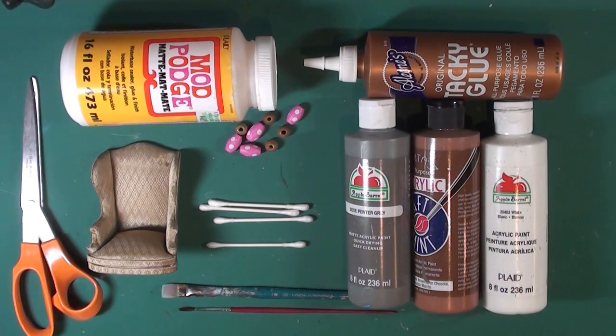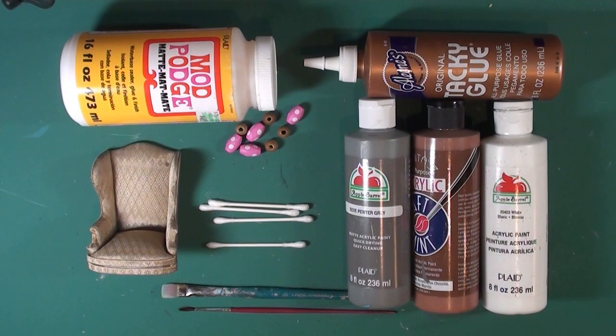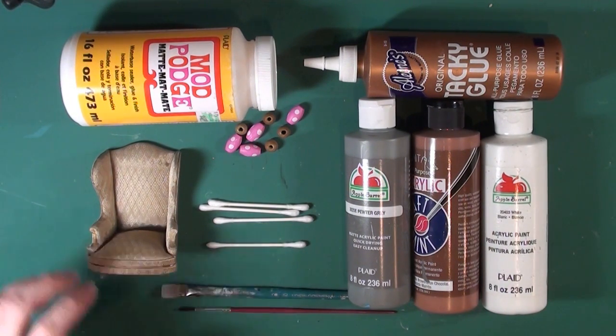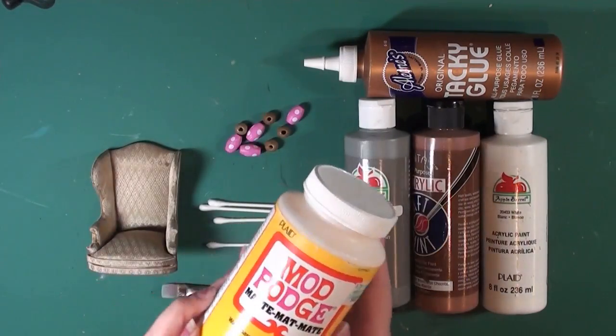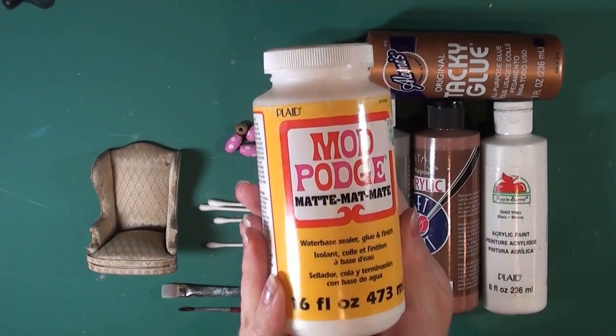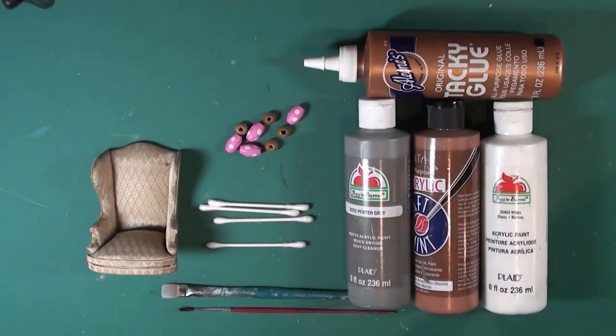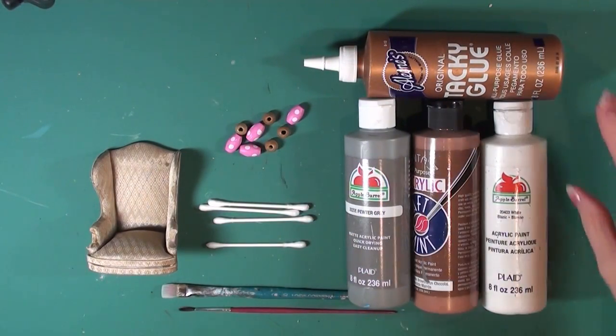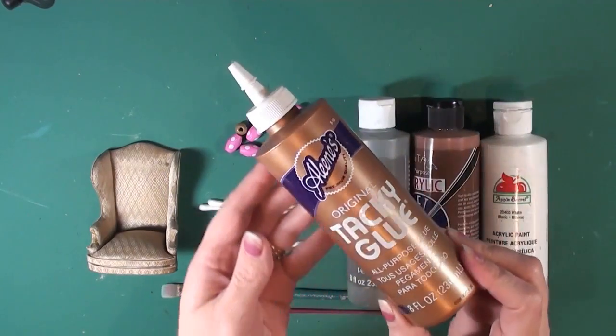Some of the things I'm going to use are scissors, or you can use a box cutter or exacto knife if you're following along. I'm going to use Mod Podge, and I typically use the matte finish. It still has a little bit of a shine but it's not super shiny. I'm also going to use tacky glue.